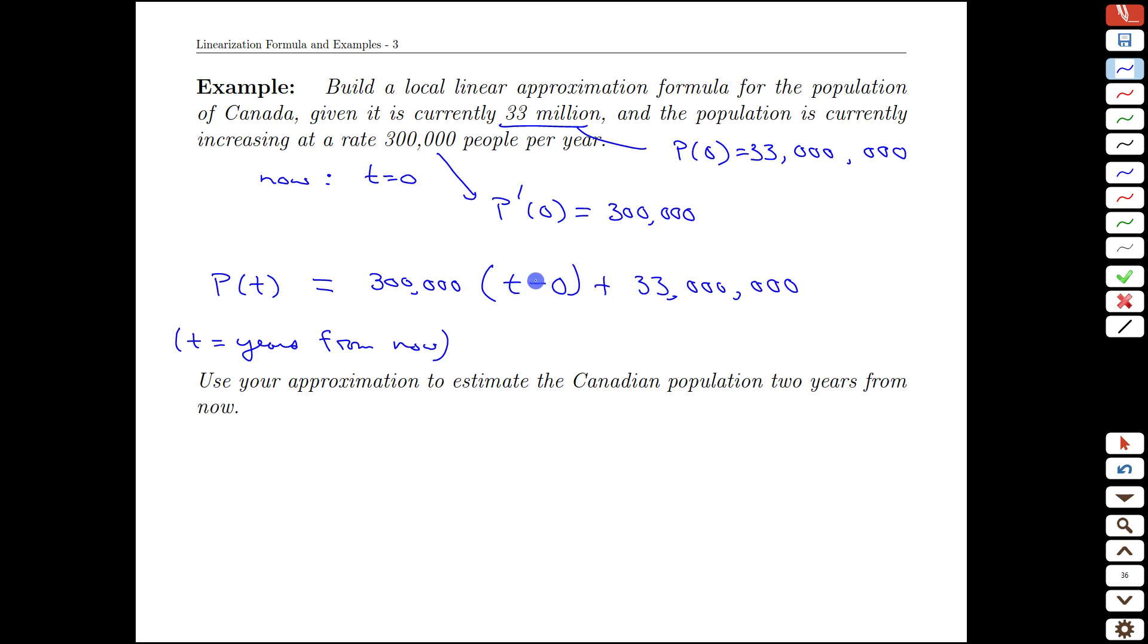So we now have, if t was zero, we would get exactly 33 million. As t gets bigger, the more we add to t, the more influence this growth has on our population. And we just note that it's going to be an approximation because we're not going to always have this 300,000 per year. But for small time intervals, it's probably a good approximation.